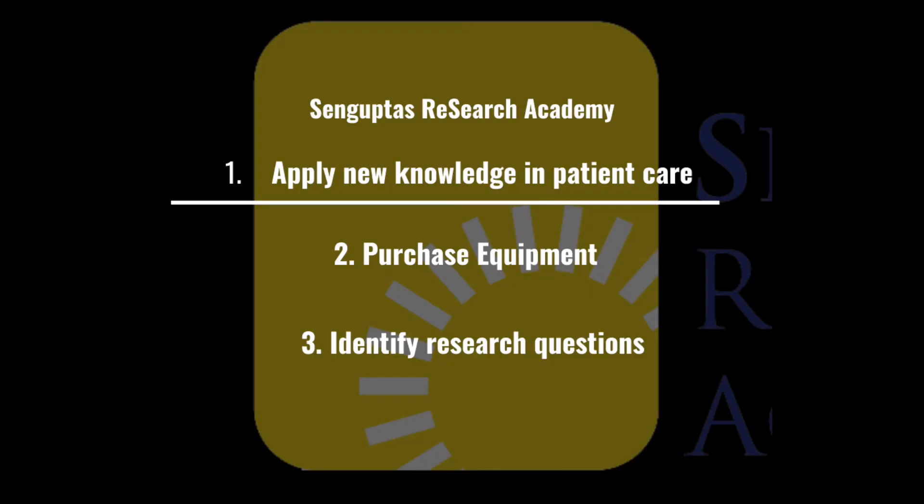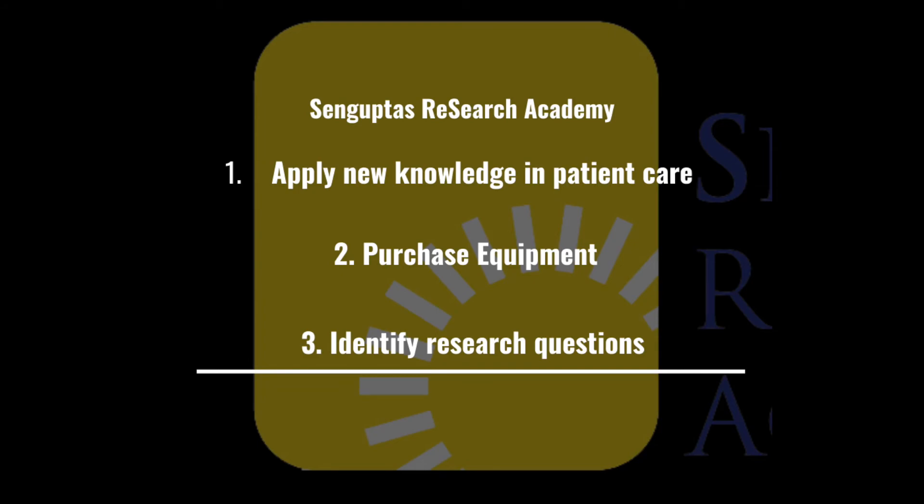In summary, the ability to read a scientific research paper is very important to apply new knowledge to your patients, purchase equipment, and identify study questions for your own research. Reading full-text articles is the best way to accomplish this. Using a checklist-based approach ensures you don't miss non-negotiable items missing from the paper. If you find a lot of deficiencies based on these checklists, that tells you the paper is probably not good enough to apply to your own patients.